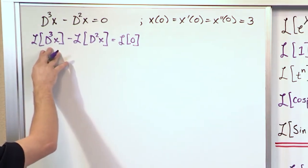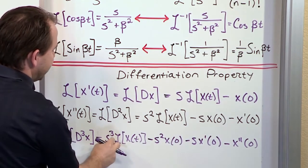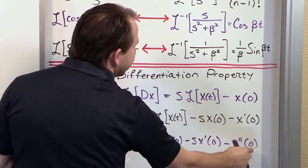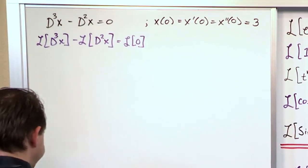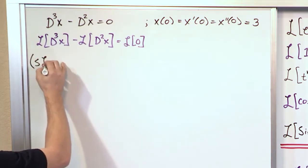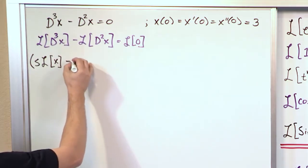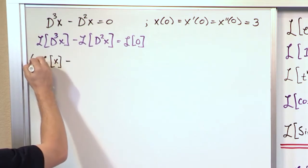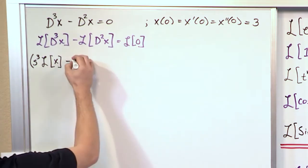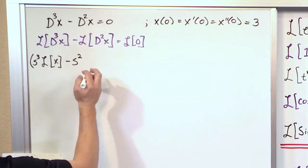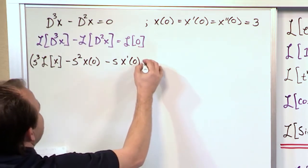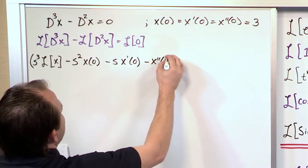For the third derivative, the Laplace Transform gives us S³ times the Laplace Transform of x, minus S² times x(0), minus S times x'(0), minus x''(0). The first S power always matches the order of the derivative. Then you go down one power in S for each successive initial condition — S², then S, then S disappears — and you have each derivative evaluated at 0.